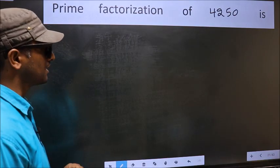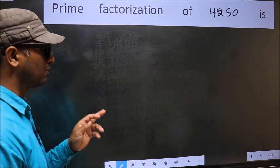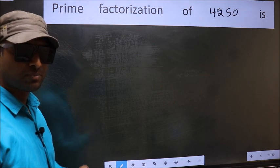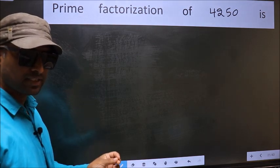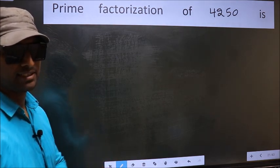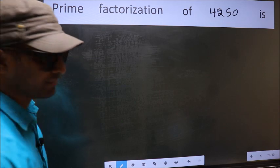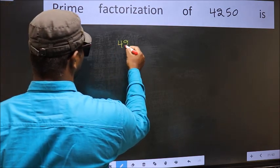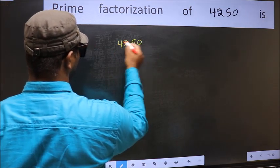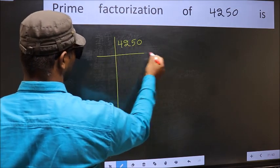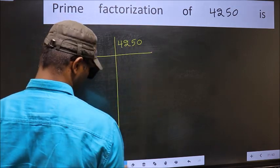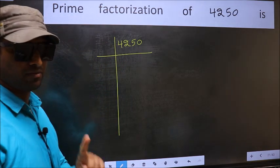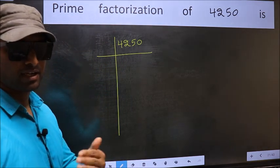Prime factorization of 4250. To do prime factorization, first we should frame it in this way: 4250. This is step 1.